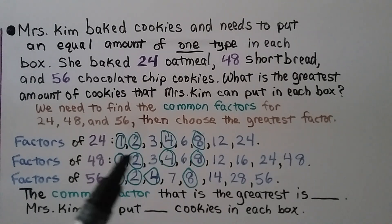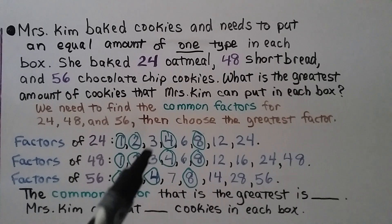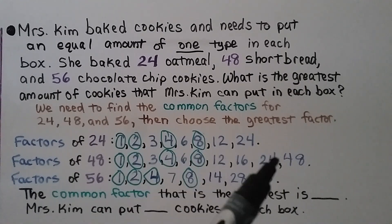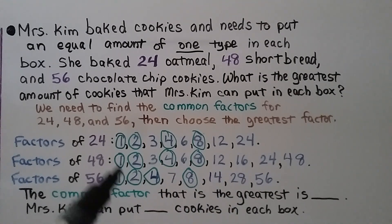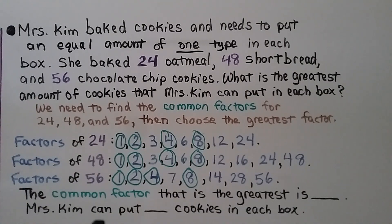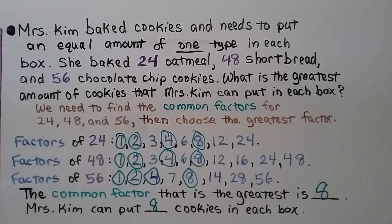We need the greatest common factor. Factors of 24 and 48 might share 3, 6, 12, and 24 in common, but those aren't on the list for 56 — it has to be common to all three numbers. The greatest common factor shared by all three is 8. Mrs. Kim can put 8 cookies of the same type in each box.